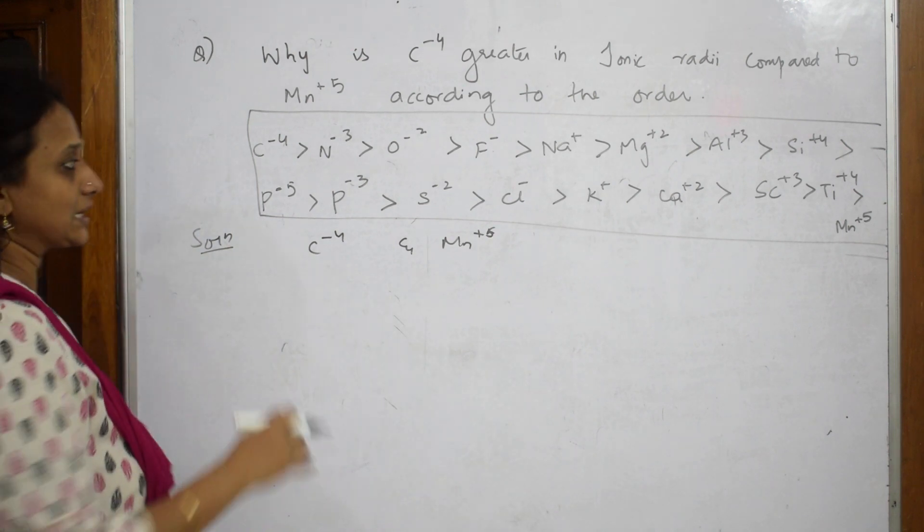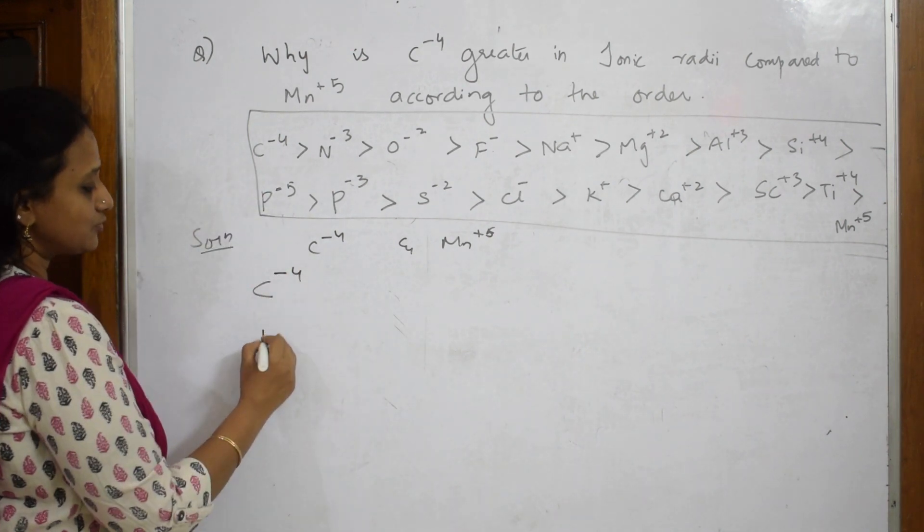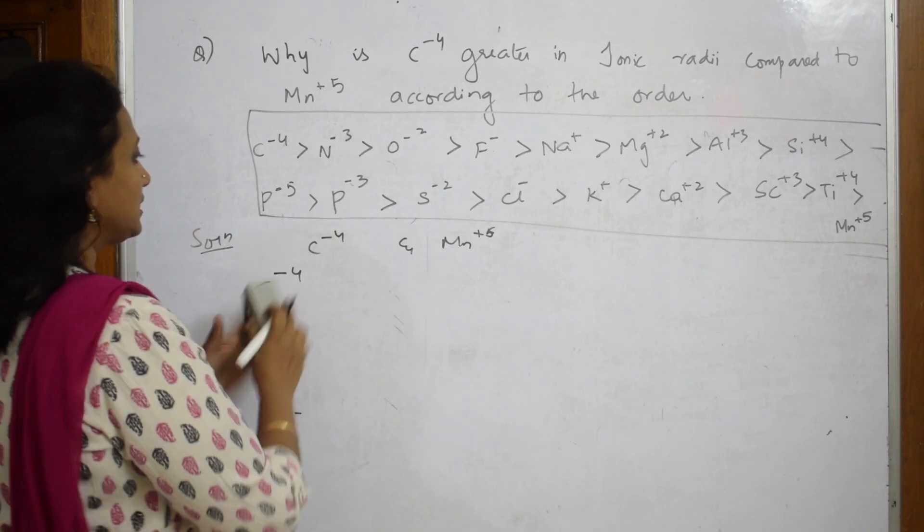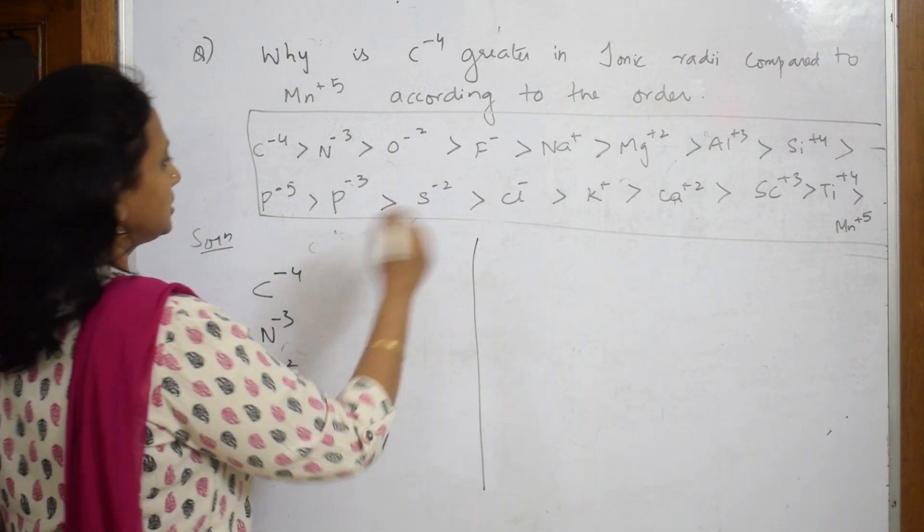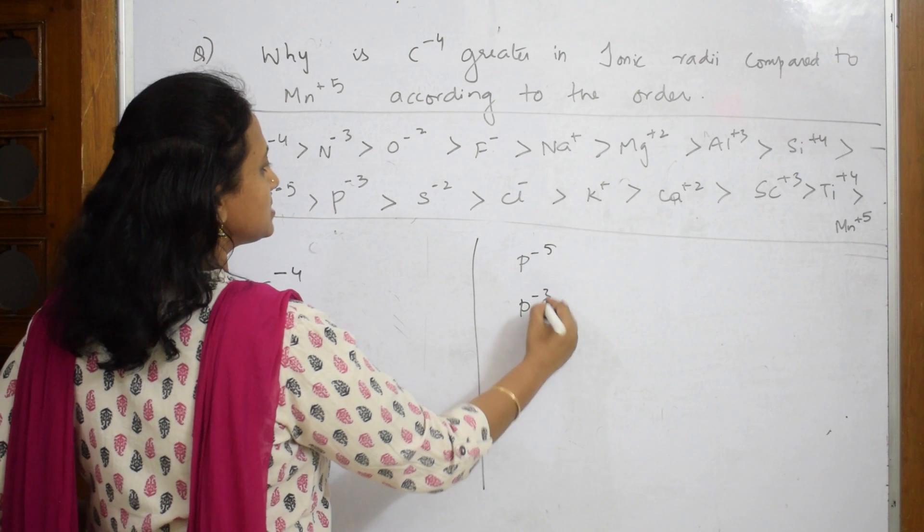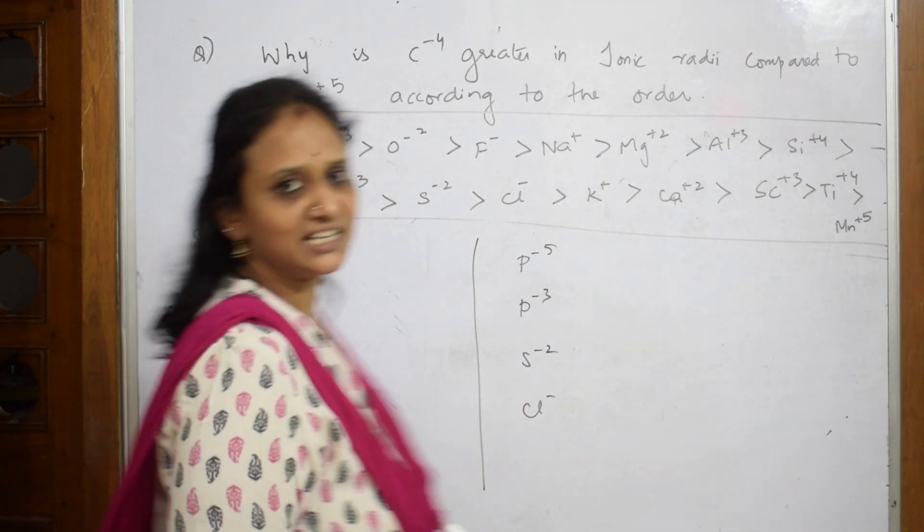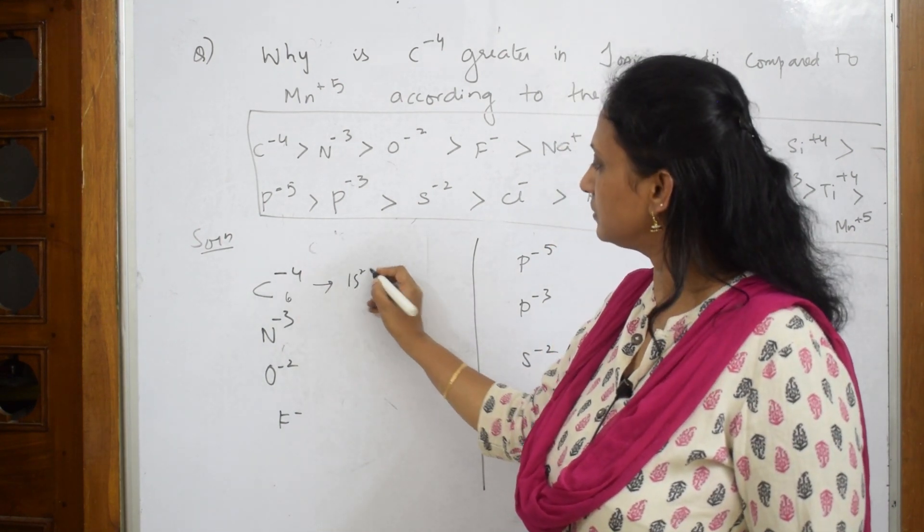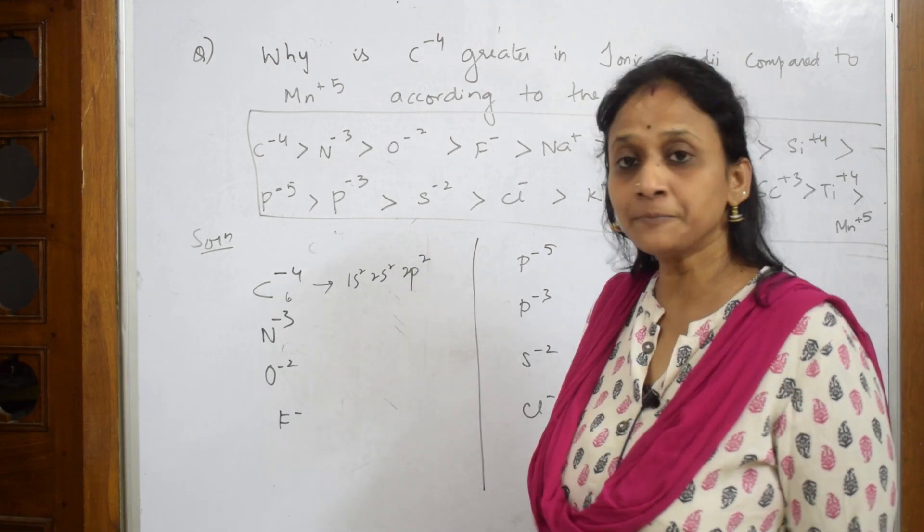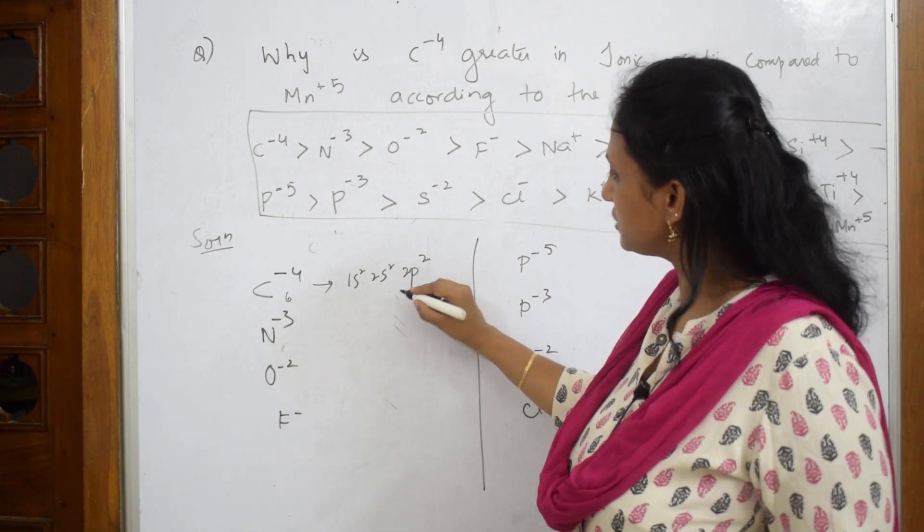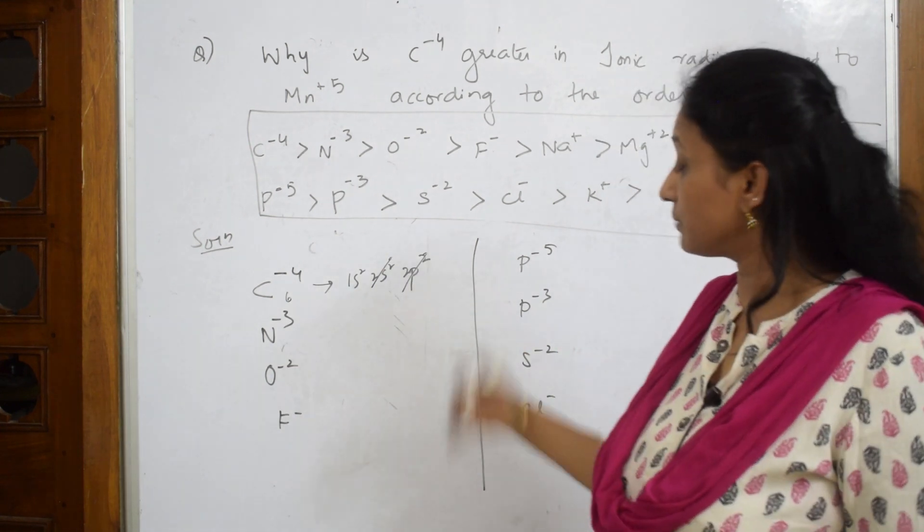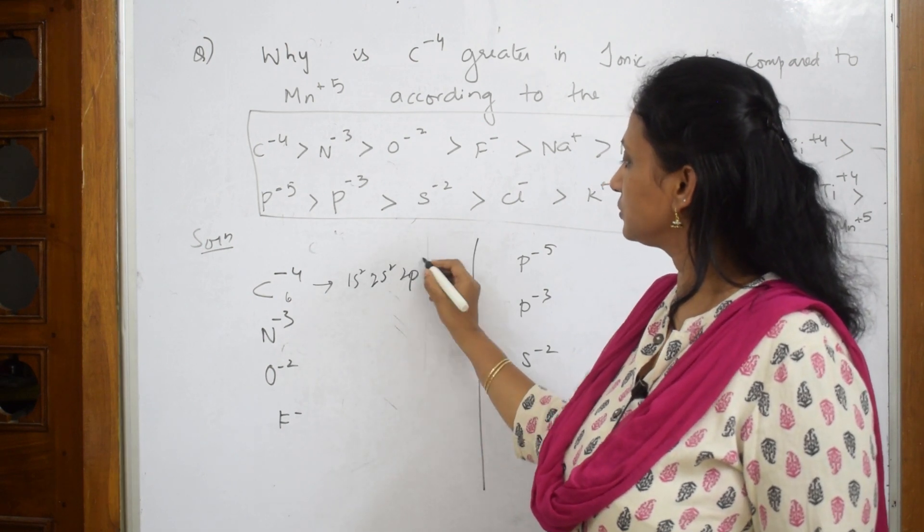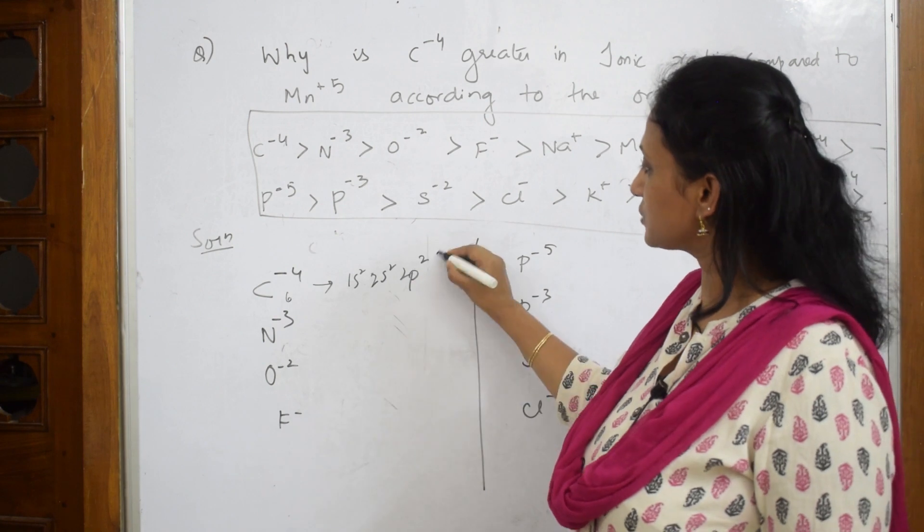Suppose if I take C^-4, the atomic number is 6. Normally it's 1s^2 2s^2 2p^2. What is this minus 4? That means you need to add 4 electrons. You're adding plus 4 electrons to this.